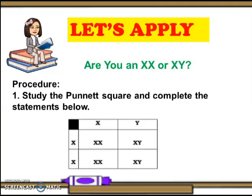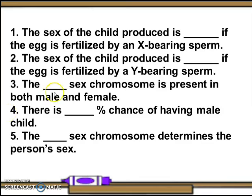Let's apply. To gain more understanding of the lesson, this activity is provided for you. Read and analyze carefully so that you will arrive at the right answer. Write your answer in your notebook. Study the Punnett square and complete the statements. Number one: the sex of the child is blank if the egg is fertilized by an X-bearing sperm. Number two: the sex of the child is blank if the egg is fertilized by a Y-bearing sperm. Number three: the blank sex chromosome is present in both male and female. Number four: there is blank percent chance of having a male child. Number five: the blank sex chromosome determines the person's sex.